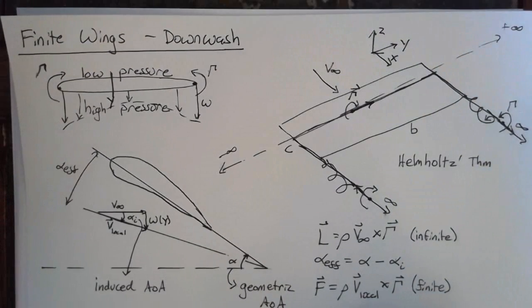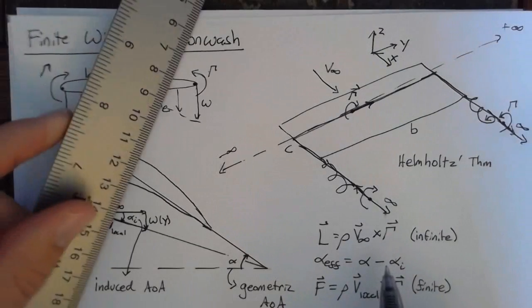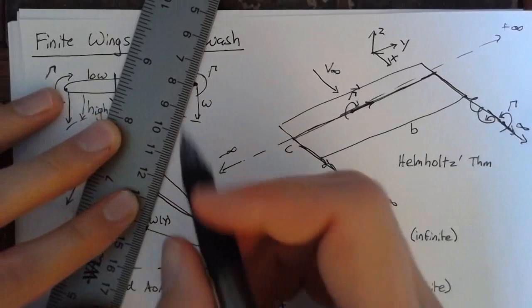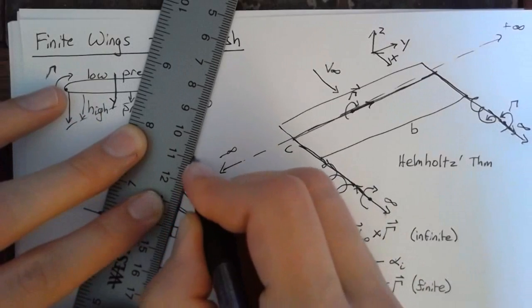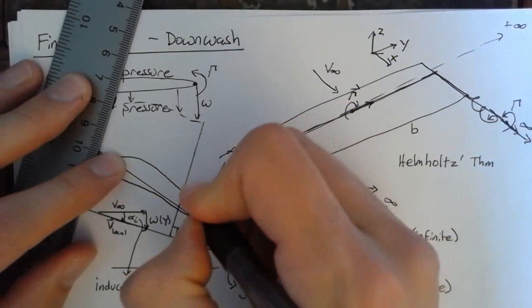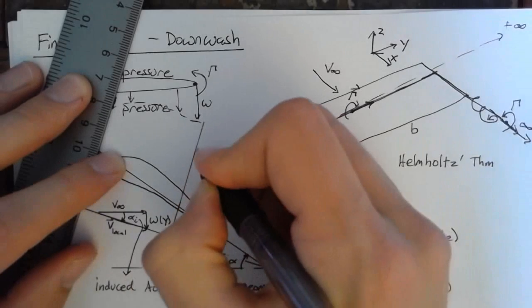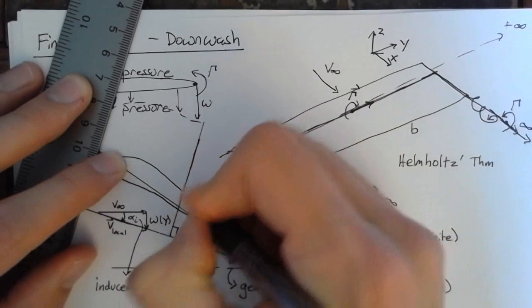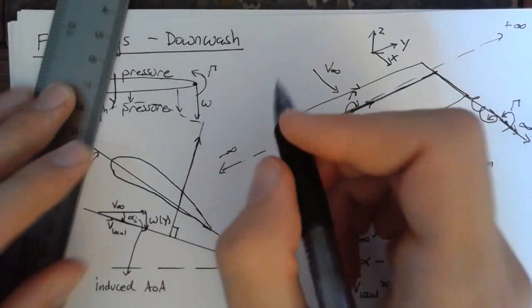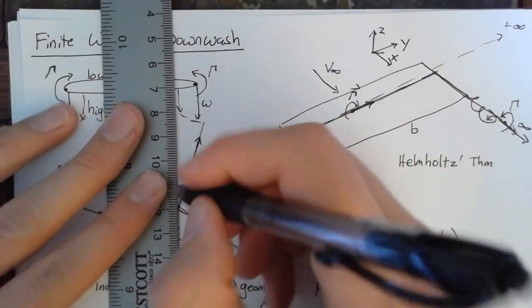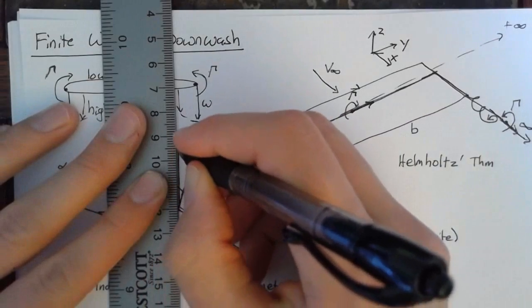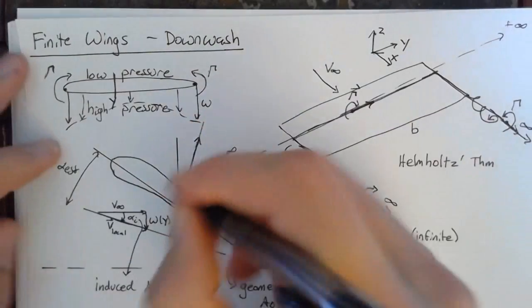So let's draw a line that is perpendicular to our local velocity. So this right here is going to be the direction of our lift. Now we still want to define lift as perpendicular to our incoming velocity.